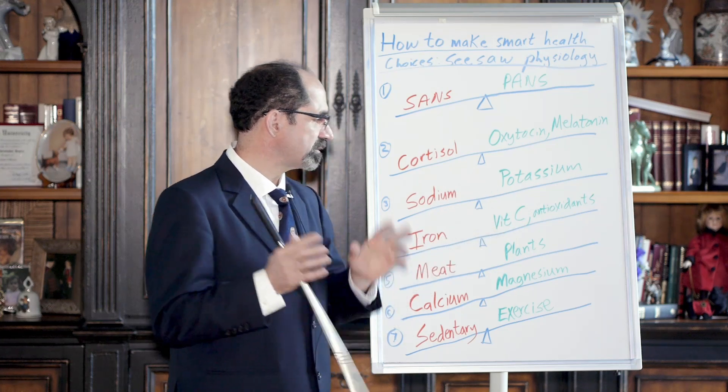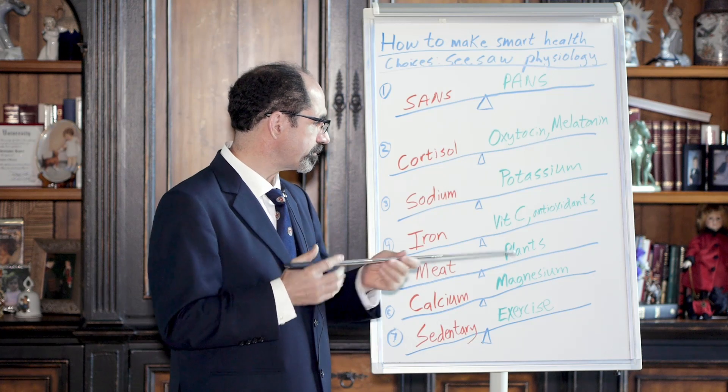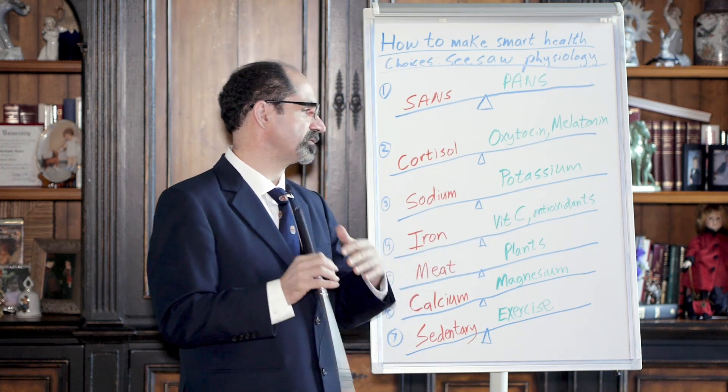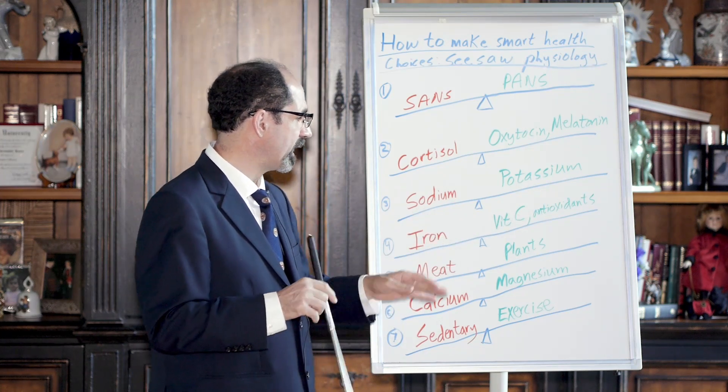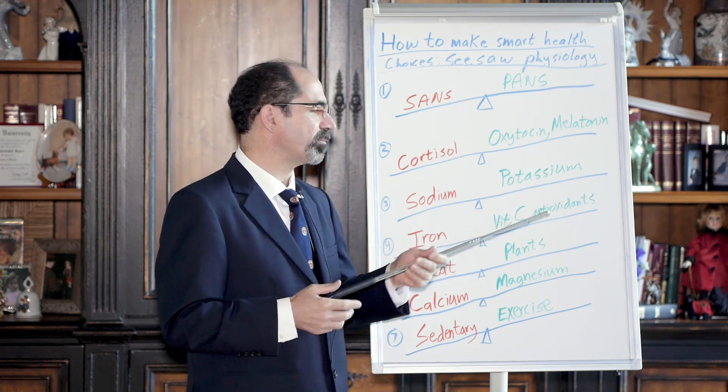Vitamin C is sort of the prototype antioxidant. And there's other antioxidants, there's the carotene, the glutathione and whatnot. But the bottom line, these come from plants.